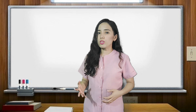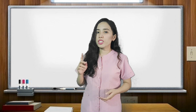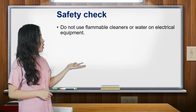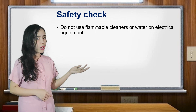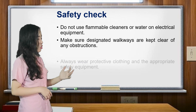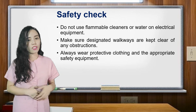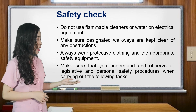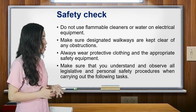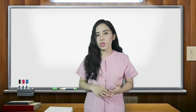All of those hand tools and PPEs will not function well if you cannot take care of them. Here are some safety checks that you need to remember. First, do not use flammable cleaners or water on electrical equipment. Two, make sure designated walkways are clear of any obstructions. Third, always wear protective clothing and appropriate safety equipment. And last, make sure that you understand and observe all legislative and personal safety procedures while carrying out the task. For your protection, you must observe those safety checks and requirements.